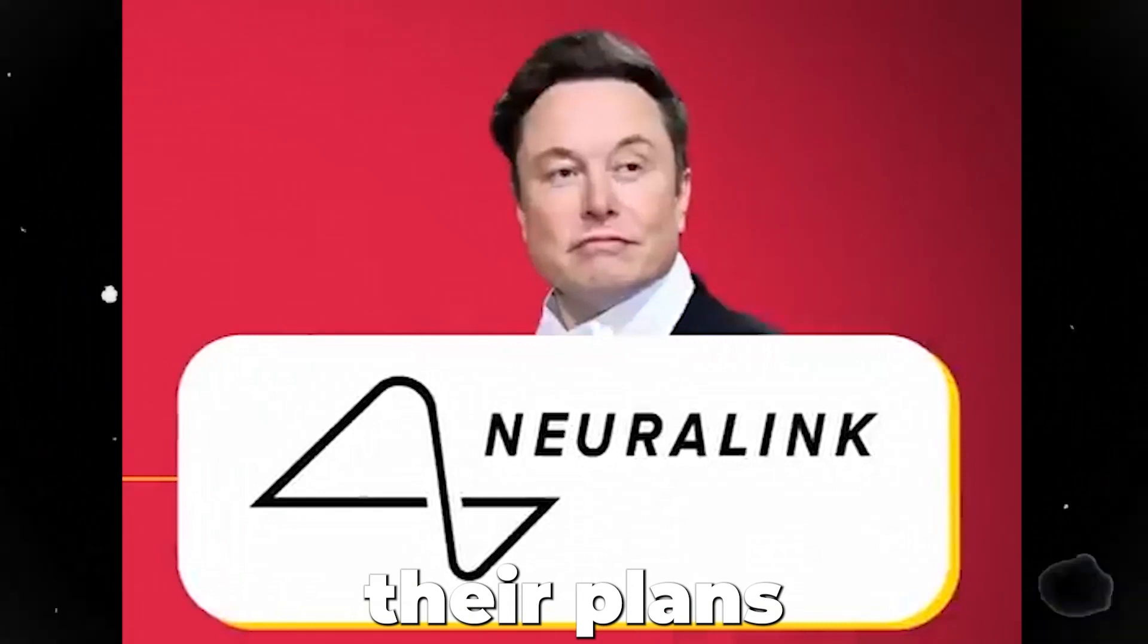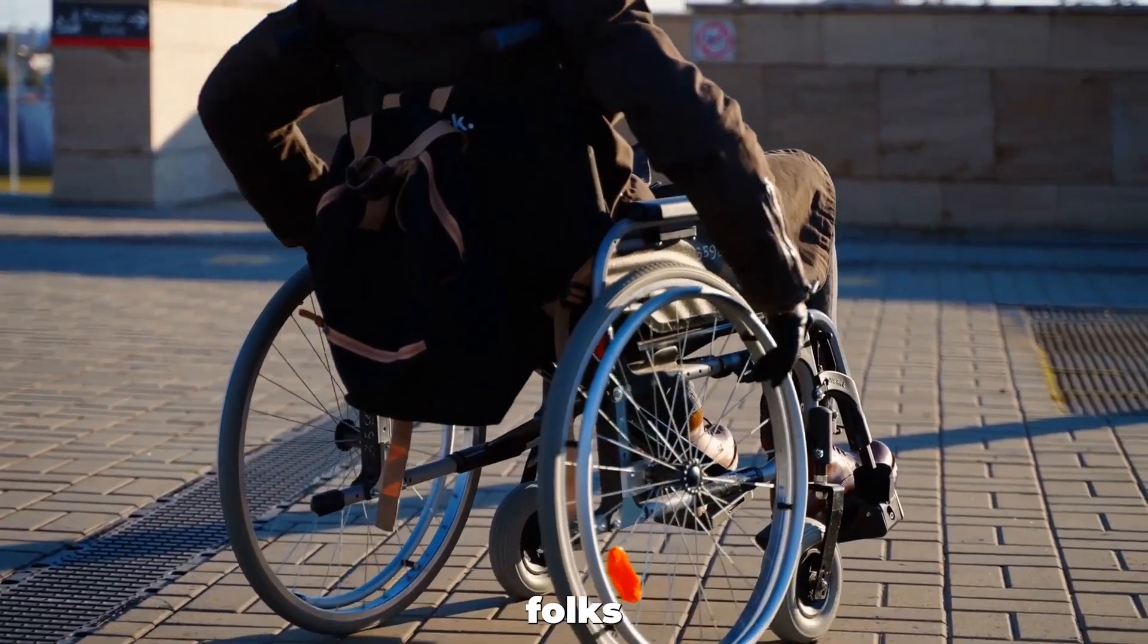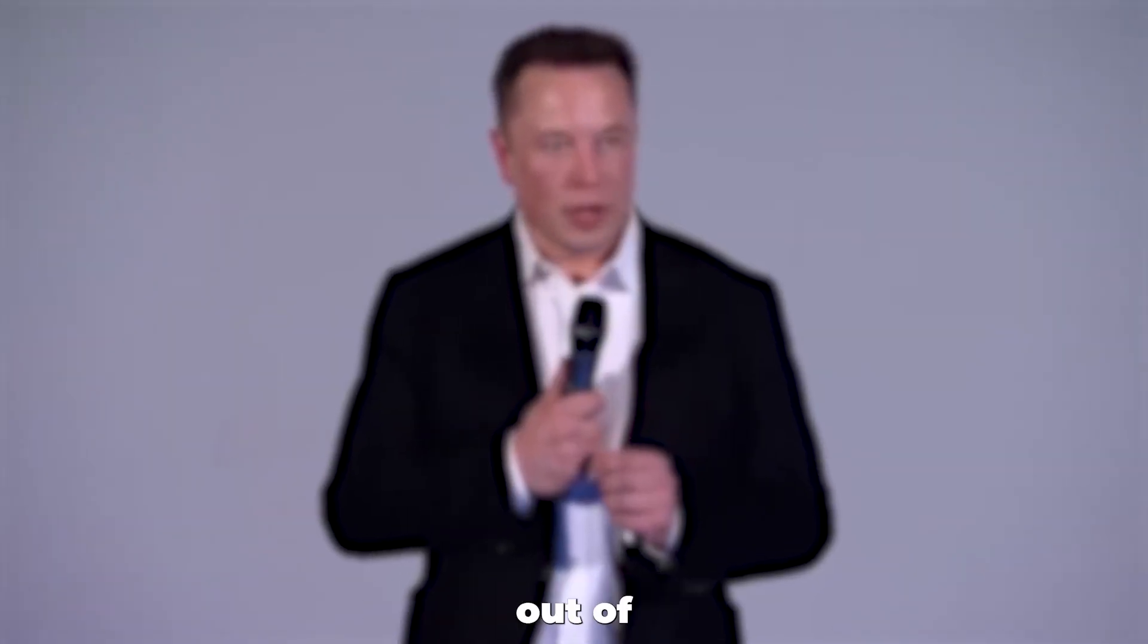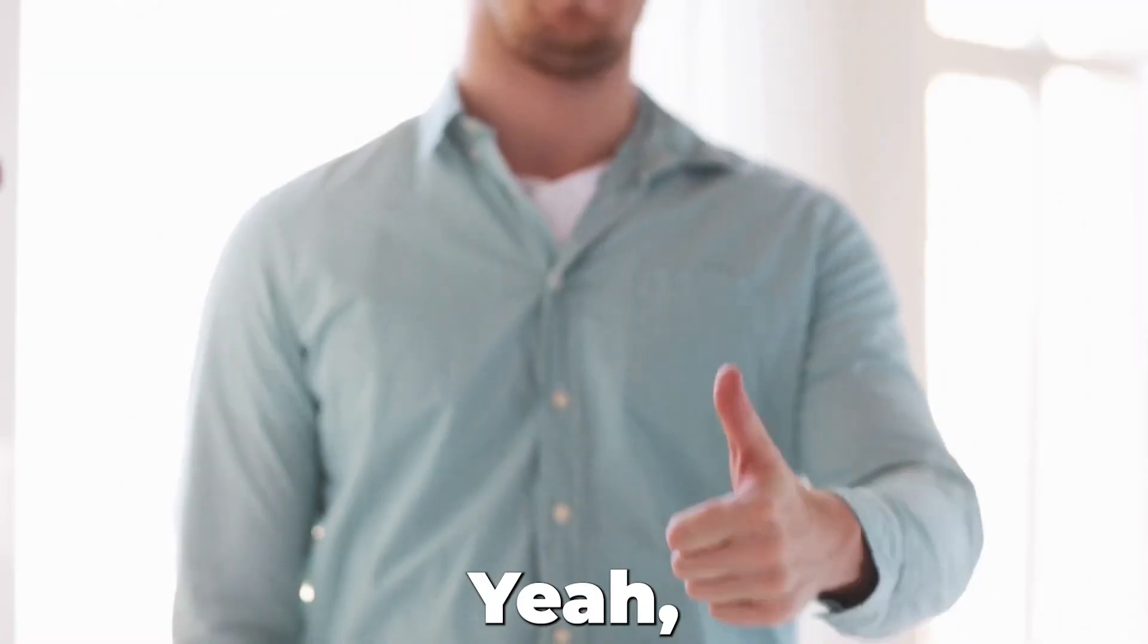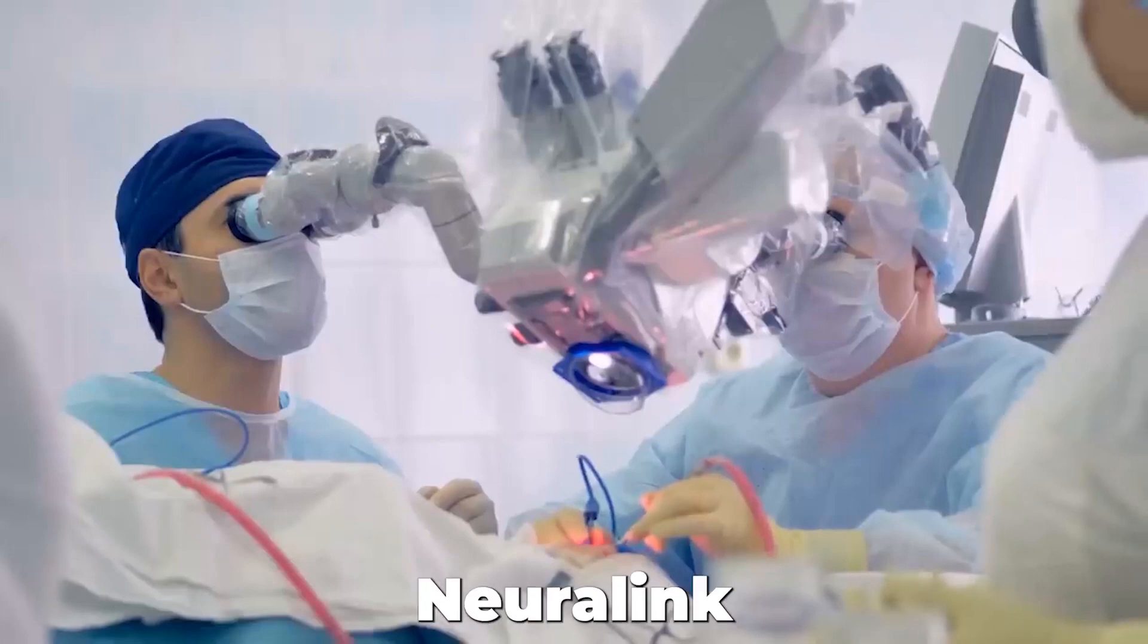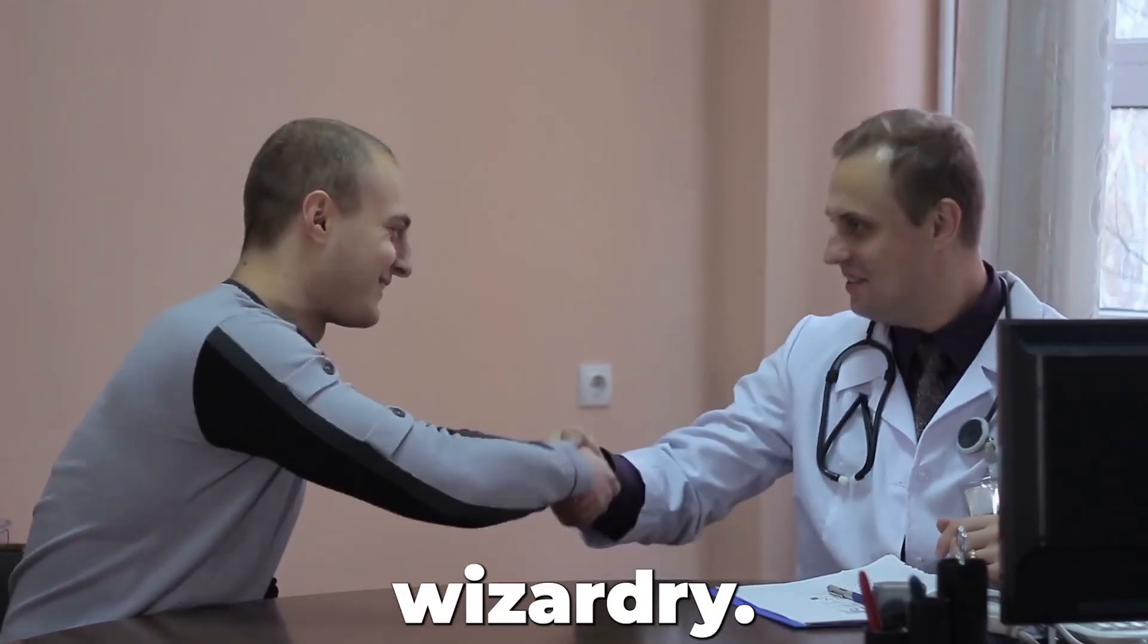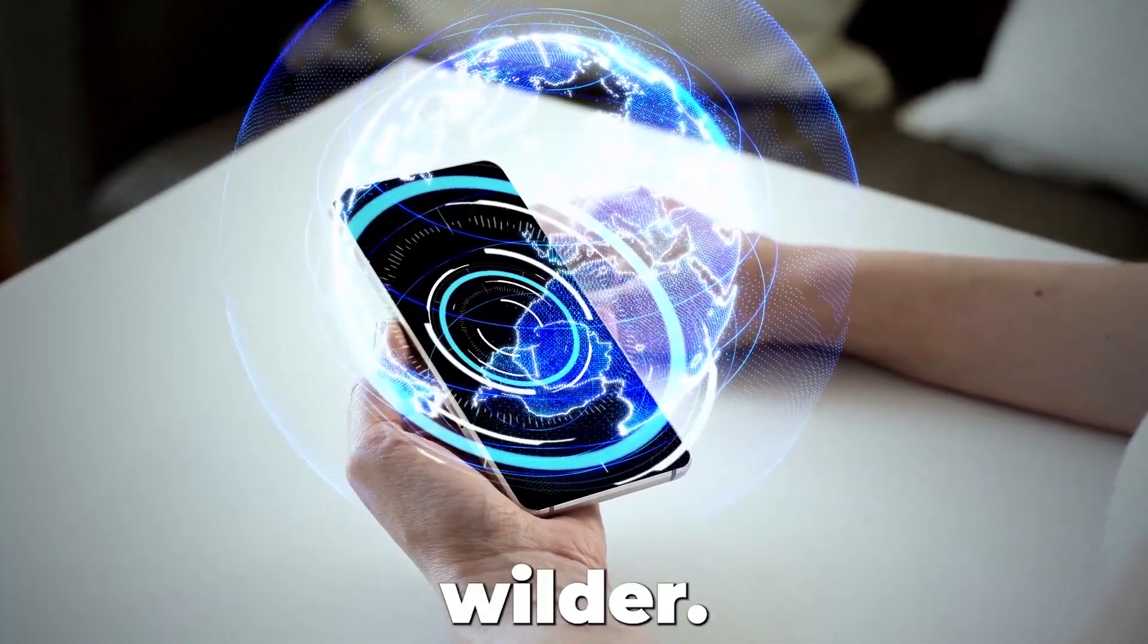When Neuralink first dropped their plans for this brain-computer interface, it was all about giving quadriplegic folks the power to control tech with their minds. But in 2020, Elon Musk hinted at something straight out of a sci-fi flick. Conceptual telepathy. Yeah, you heard that right. This means that Neuralink could potentially let two people communicate through their thoughts, thanks to its wizardry. And brace yourself for what's next because the future just keeps getting wilder.